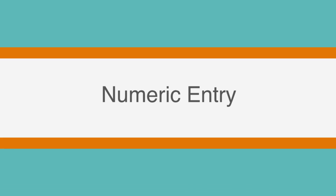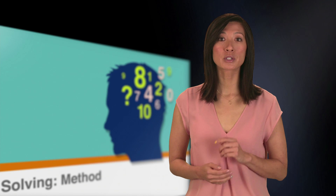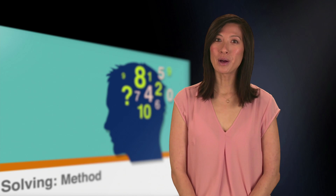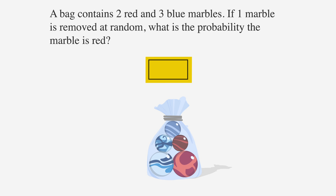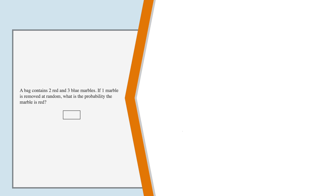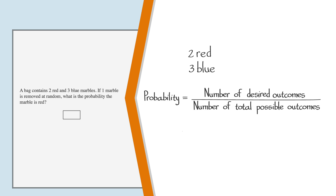Finally, we come to the last question type: numeric entry problems. These problems cover the same material as multiple choice questions, but there aren't any answer choices provided. We will also use the same techniques of rewriting, solving strategically, and checking our answers. When we find the answer, we enter it into the text box in the middle of the page. A bag contains two red and three blue marbles. If one marble is removed at random, what is the probability the marble is red? Using the formula for probability, since our desired outcome is a red marble and there are two red marbles, we put a 2 in the numerator. There are five total marbles, so we put a 5 in the denominator. The answer is 2/5. Since we are only given one entry box, we must enter the decimal equivalent by dividing 2 by 5, which is 0.4.